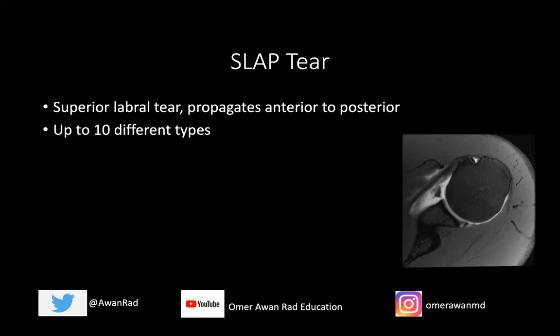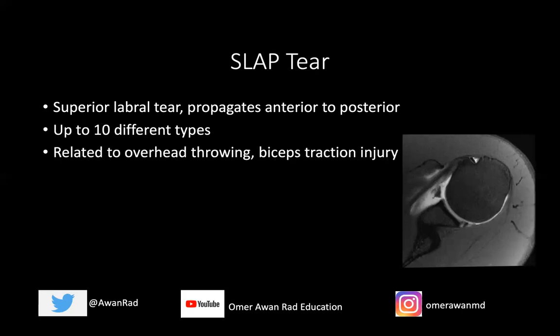There are actually up to 10 different types of SLAP tears, but it's not necessary to go through all of them at a resident level for the core exam — knowing that a SLAP tear exists and being able to diagnose it is sufficient. This is again related to overhead throwing or baseball pitching, and it's a biceps traction injury typically with forced extension where the forearm is in flexion. Always be careful about labral variants — they typically occur at the one to three o'clock quadrant. You can have a sublabral foramen, as in this case, which is not a tear but a normal variant, or a partially unattached labrum known as a superior recess or perilabral recess.